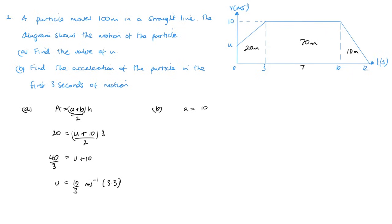So that would be the difference in the y values. So that would be 10 minus 10 over 3 divided by the difference in the x values, which is between 0 and 3.